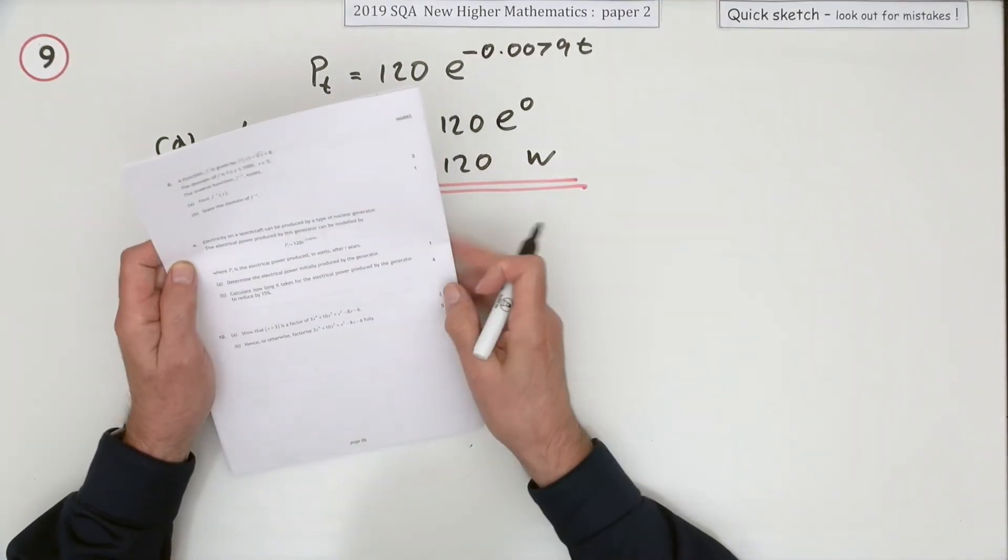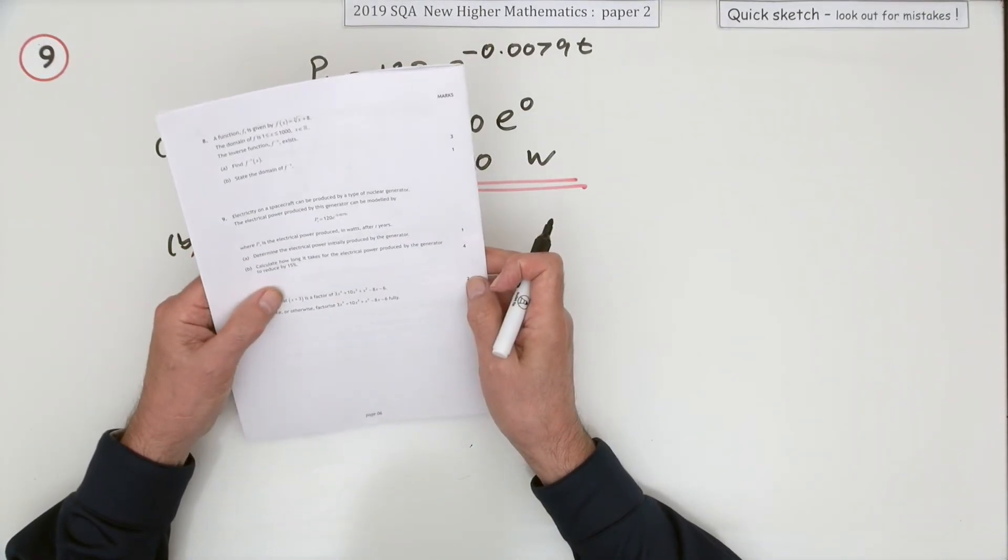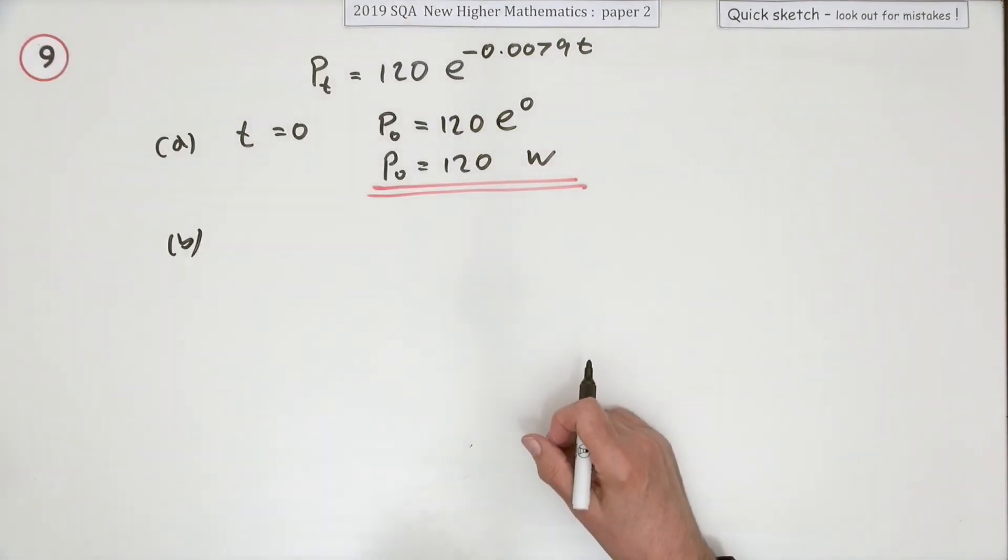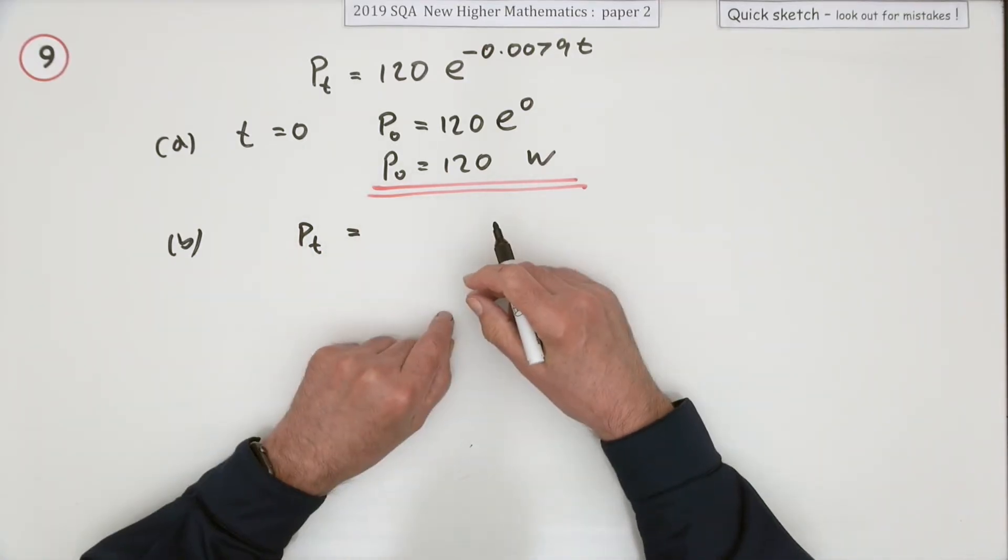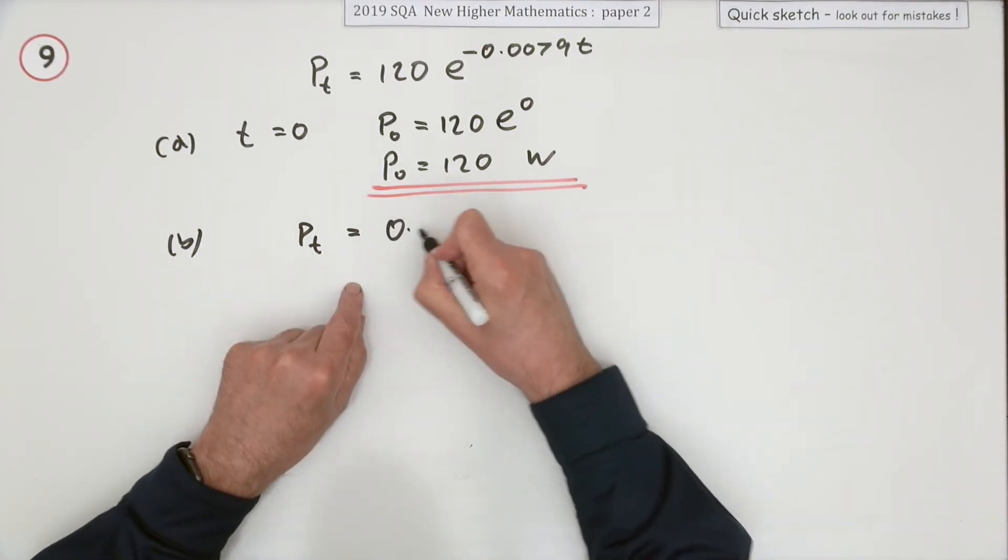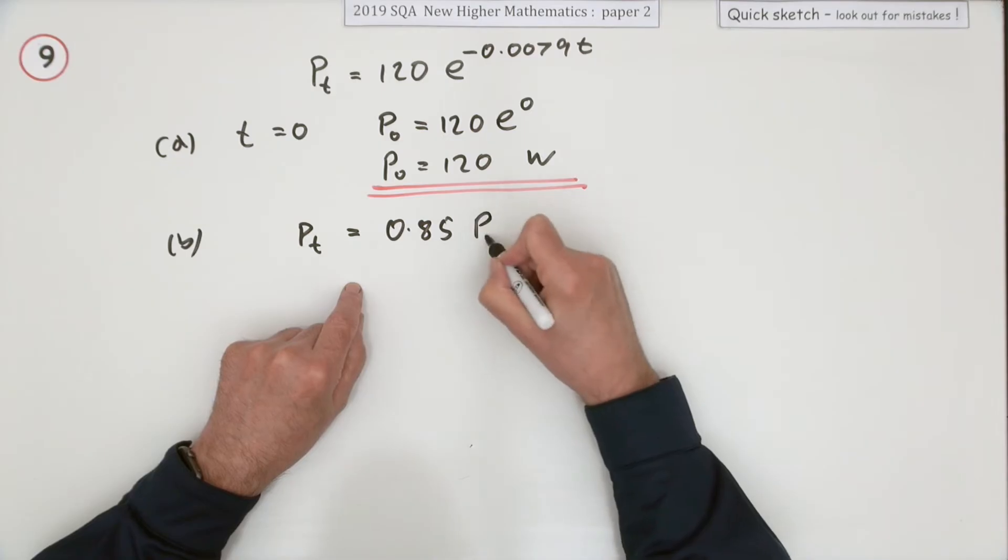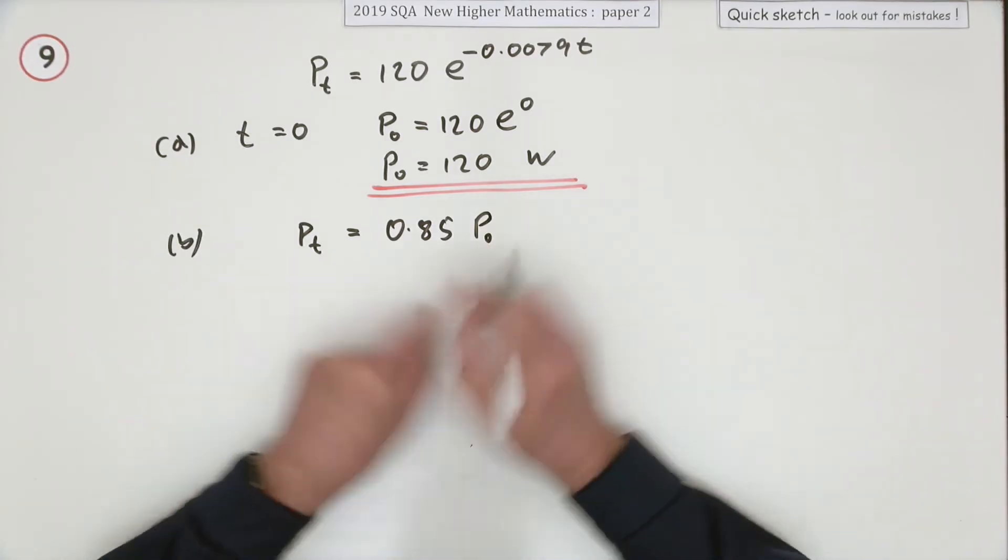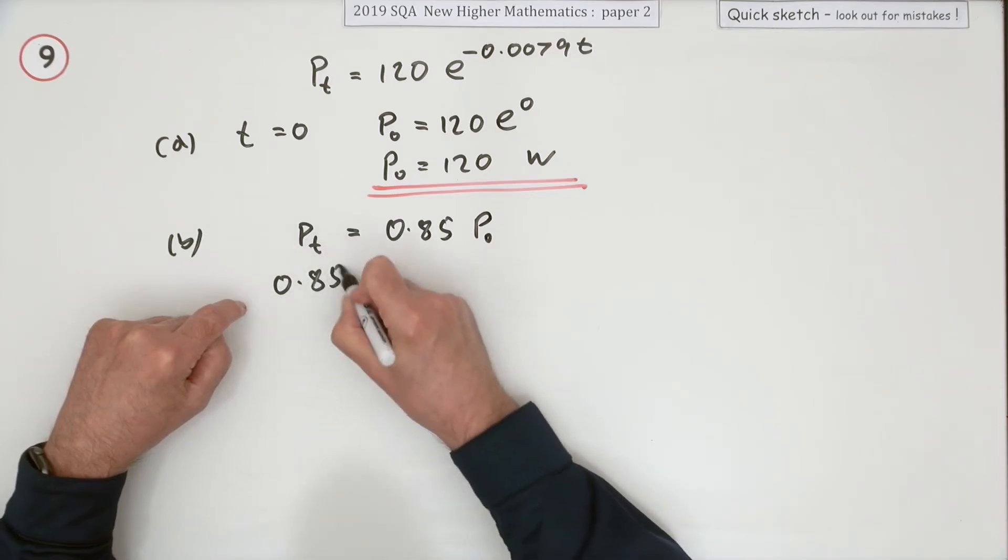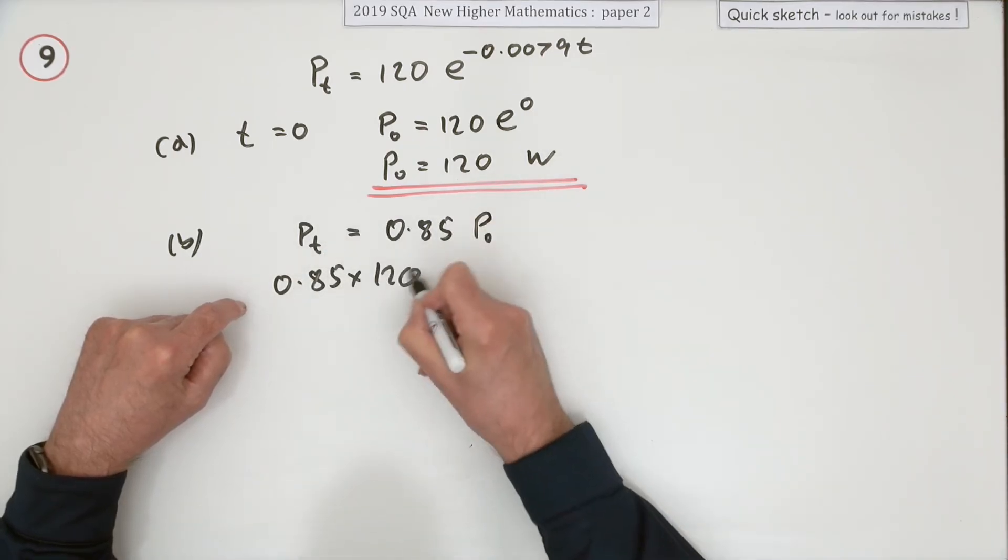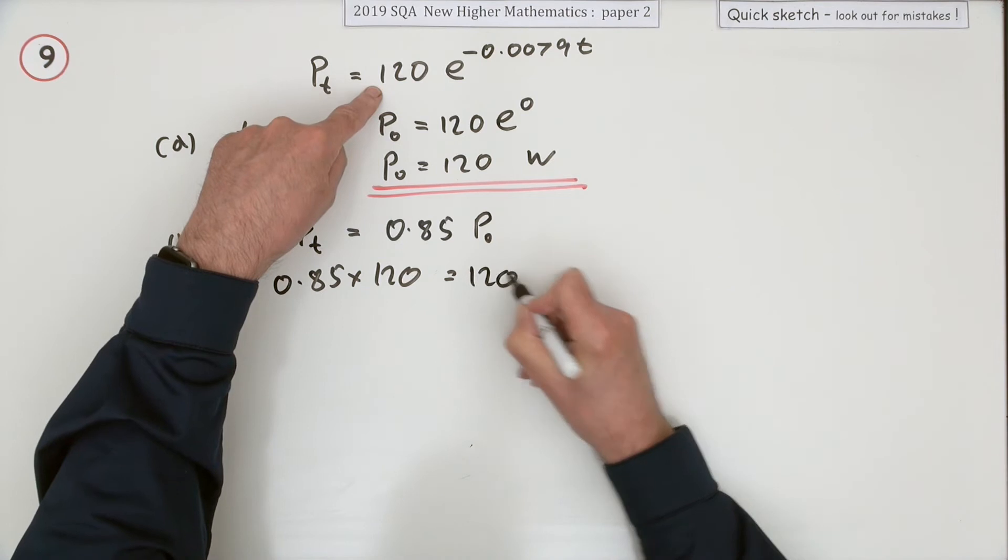Part B: calculate how long it takes for electrical power produced to fall by 15 percent. In other words, you want P_t to be 15 percent less—you want P_t to be 0.85 of what it was initially. You can say 0.85 times the initial amount equals 120e^(-0.0079t). In this equation everything is a number apart from t, so you can find that.